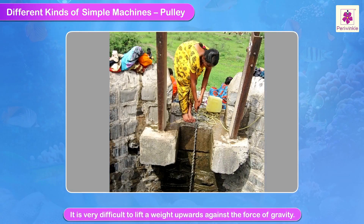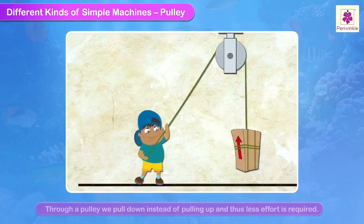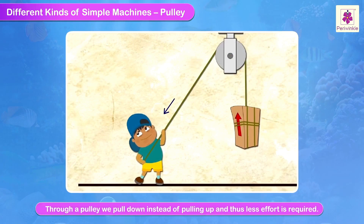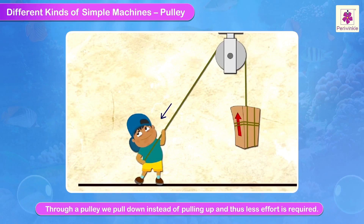It is very difficult to lift a weight upwards against the force of gravity. But through a pulley, we pull down instead of pulling up, and thus less effort is required.